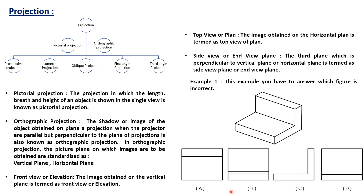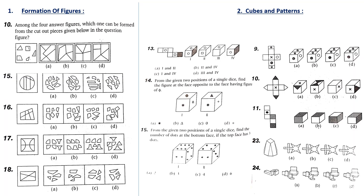In example number one, you are given an isometric view and you have to identify which is the incorrect figure. Option A is definitely a valid answer because A is the plan; D can also be the plan, and C is also an option. But B is not correct — if you look at the object carefully, it will appear like option A. Projections are one of the important topics you also need to solve.